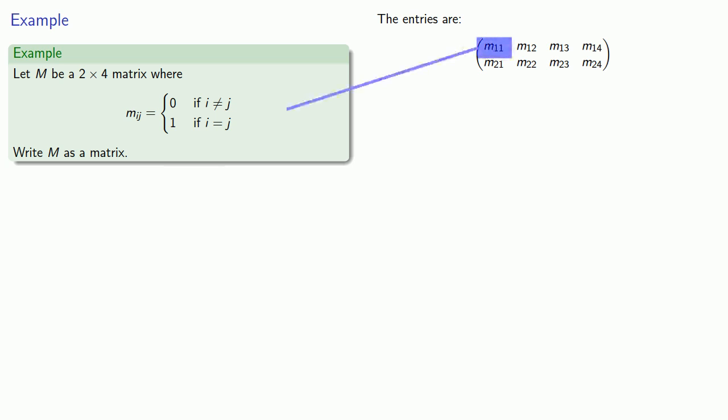So we need to find M11, M12, and so on. So M11, because i is equal to j, is going to have value 1. M12, M13, and M14, because i and j are not equal, are all going to be 0.